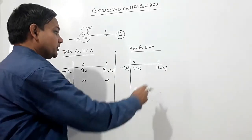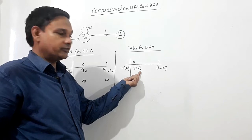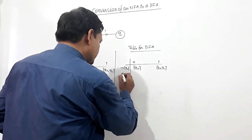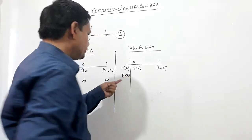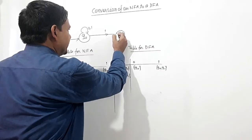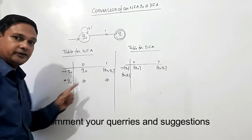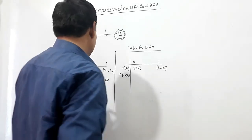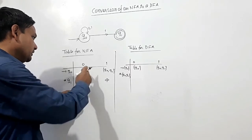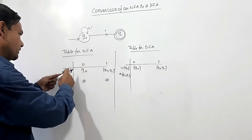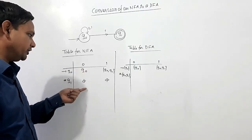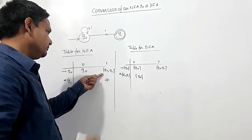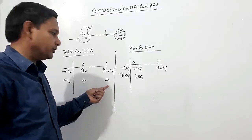I'm writing it Q naught Q1. Transition at Q naught has been shown: on 0 it's Q naught and on 1 it's Q naught Q1. So I take the set of states Q naught Q1, which is also the final state — Q1 is the final state, so I'm marking this state as a final state. At Q naught Q1, transition on 0 will be Q naught union phi, which gives Q naught. At one it will be Q naught Q1 union phi, which gives Q naught Q1.